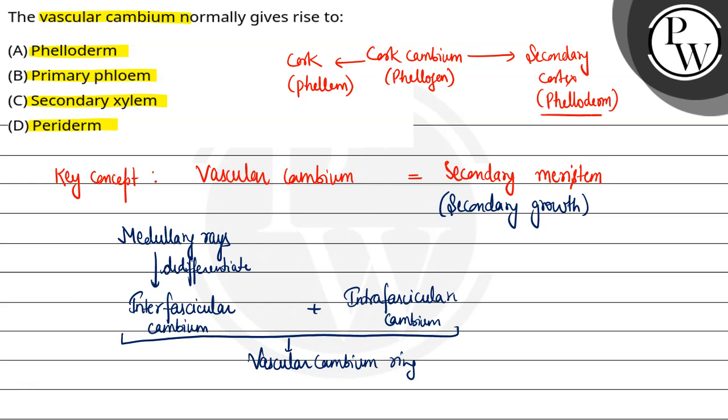First option mein ye hi bola hai phelloderm. Phelloderm ki formation karta hai cork cambium to ye option incorrect ho jayega. Second option hai primary phloem. To primary phloem ek primary vascular tissue hai aur iska koi role nahi hota hai secondary growth mein to ye incorrect ho jayega.